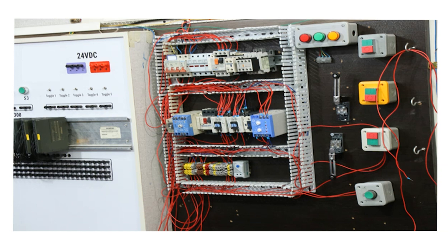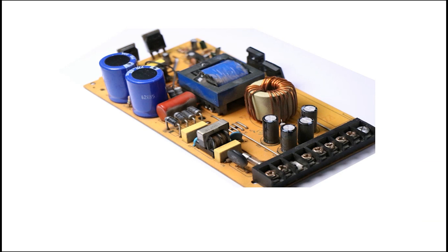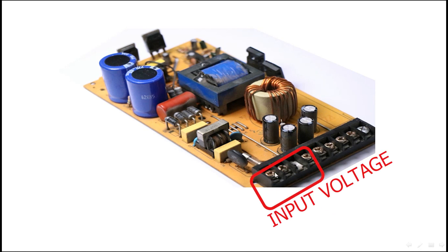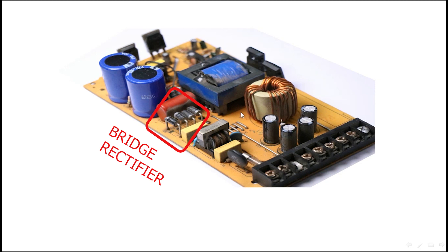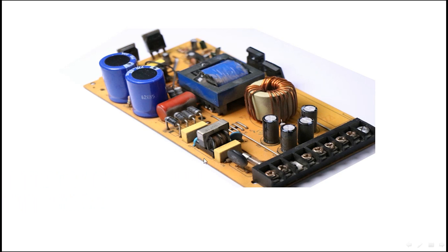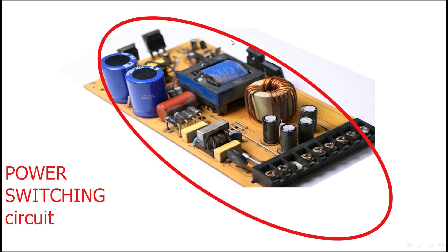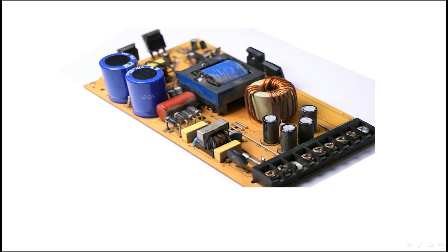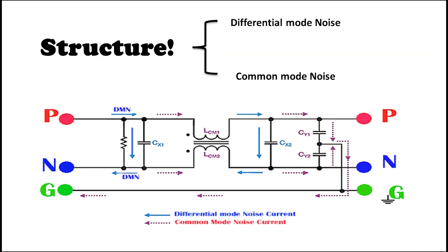To remove this kind of noise, we use EMI filters. Where exactly should this filter be placed in your circuit? As you can see in these pictures, the filter is placed at the input voltage stage, before the rectifier diode. This means at the very first stage of your circuit, you must eliminate the noise. For example, in a switching power supply circuit, you want to remove noise at the first stage.